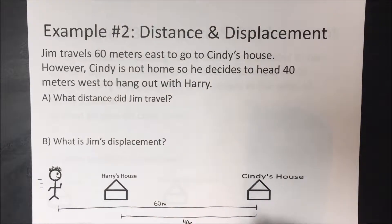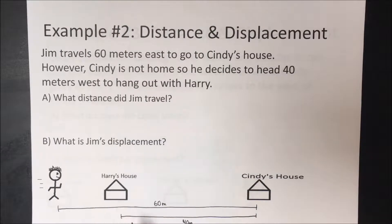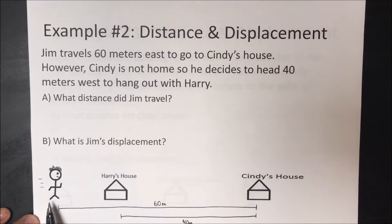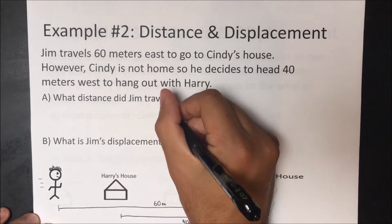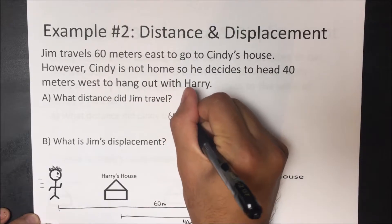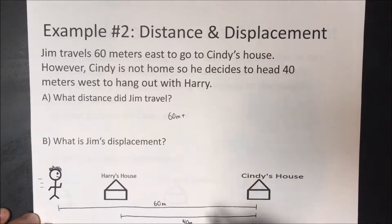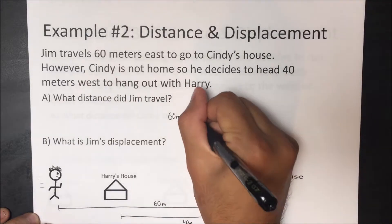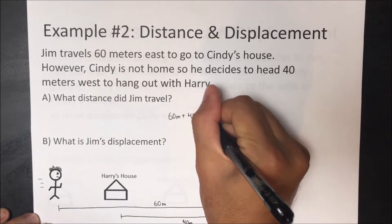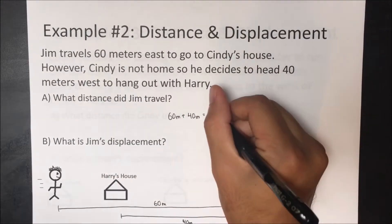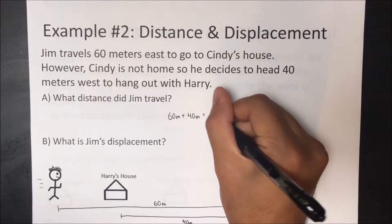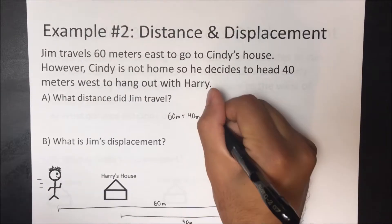Remember, distance is how much ground an object has covered during its motion. Jim covered 60 meters going to Cindy's house, and then another 40 meters going to Harry's house, which means he covered a total distance of 100 meters.